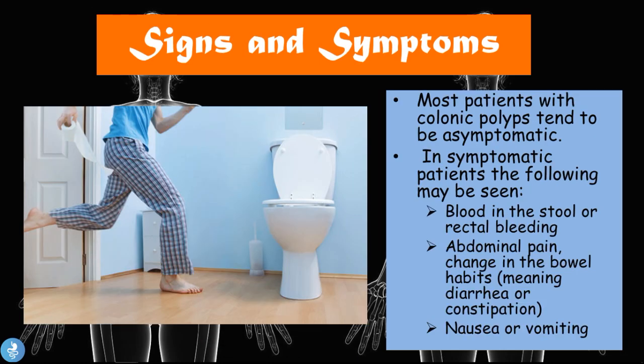Now let's talk about some signs and symptoms of colon polyps generally. Most patients with colonic polyps tend to be asymptomatic. In symptomatic patients the following may be seen: blood in the stool or rectal bleeding, usually bright red blood called hematochezia; abdominal pain; a change in bowel habits such as bouts of diarrhea or constipation; and nausea and vomiting.